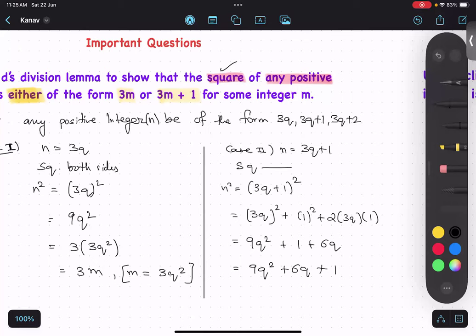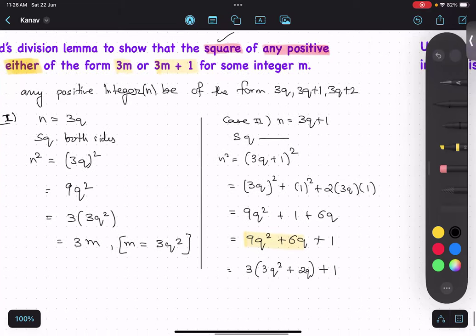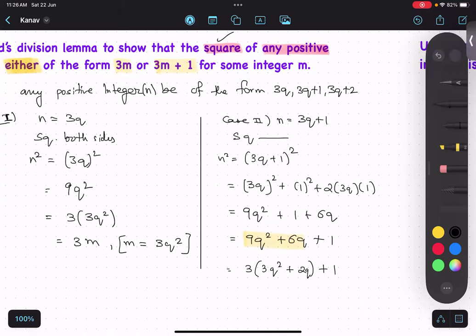I don't think so I can take 3 common from all, isn't it? No, but I can take 3 common from these two. So let me just take 3 common. So what will I get? 3Q square plus 2Q. I can take Q common also, but it's okay, this is also correct. I want 3, question is talking about 3. Therefore 3M plus 1, where M equals to 3Q square plus 2Q.